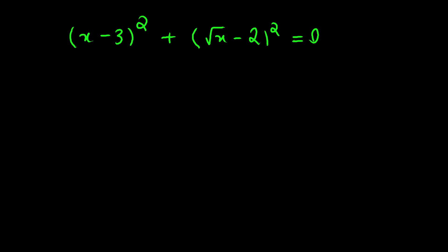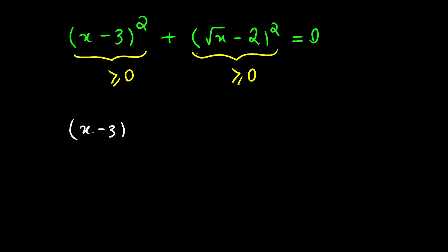We now have the sum of two perfect squares equal to 0. Since any perfect square is greater than or equal to 0, we have the sum of two non-negative numbers equal to 0. That means both expressions must individually equal 0 — because if either were positive, the sum would be positive. So the quantity x minus 3 all squared equals 0, and the quantity square root of x minus 2 all squared equals 0.